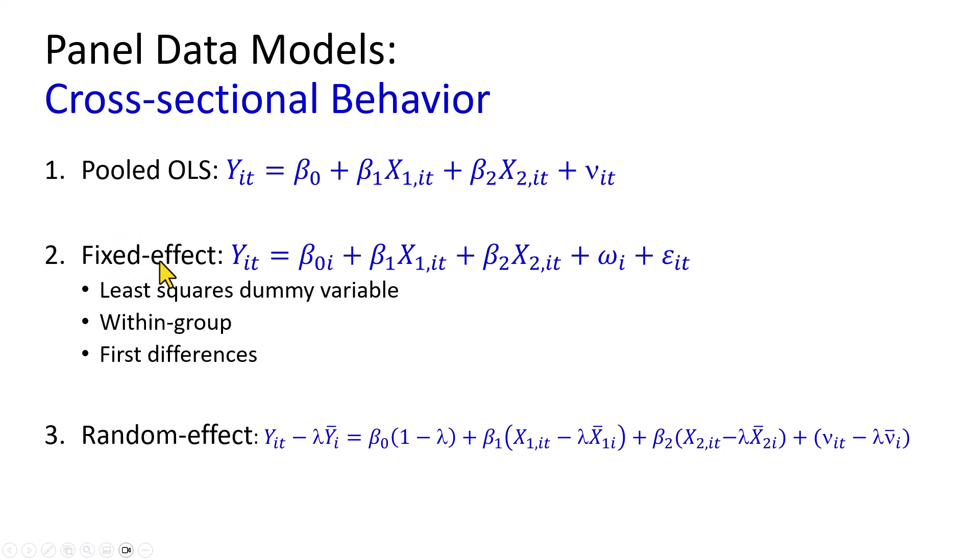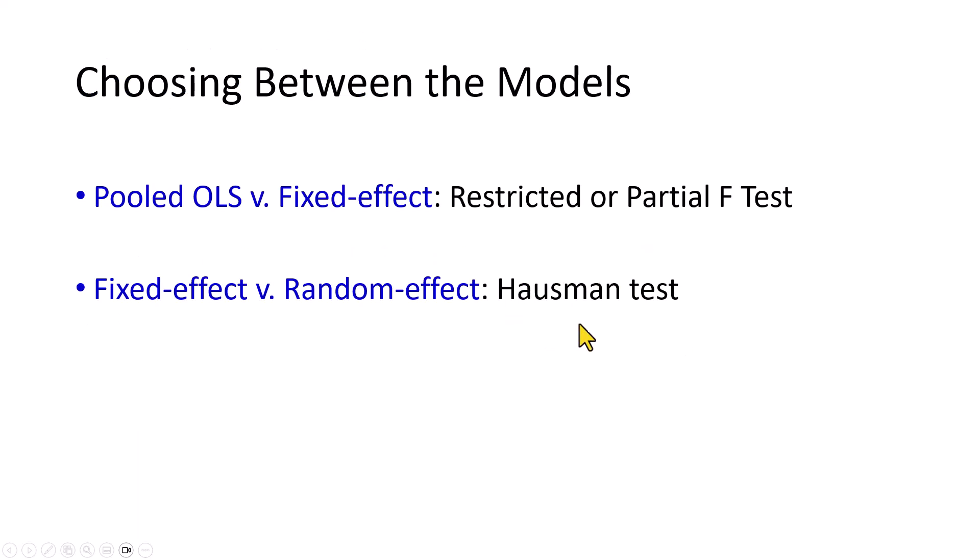With fixed effects, you'd have to settle for either least squares dummy variable or within group or first differences estimator. And of course, the choice of whether to run a fixed effects model or random effects model depends on the verdict of the Hausman test.